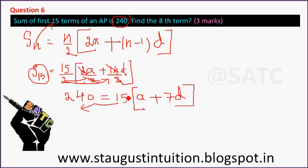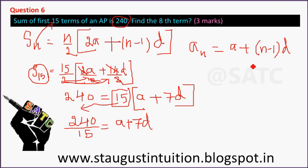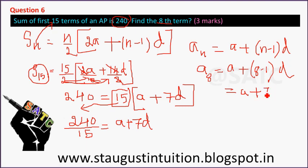So we get A plus 7D. Then 240 divided by 10 is equal to A plus 7D, giving us A plus 7D equals 24.